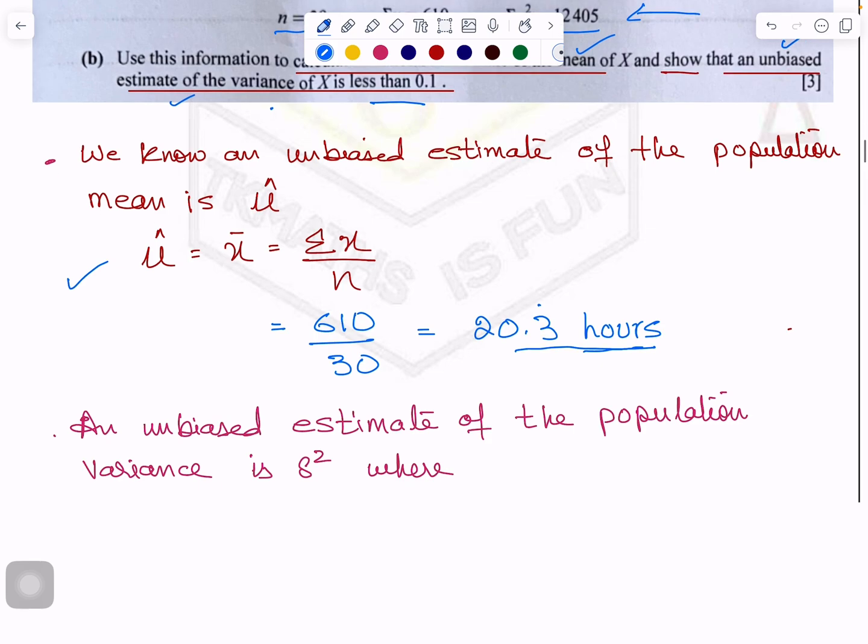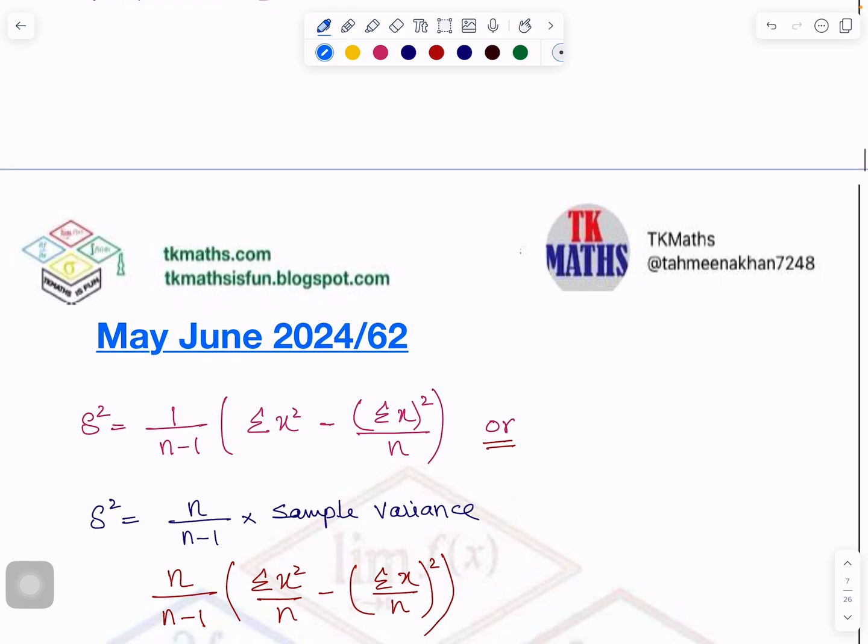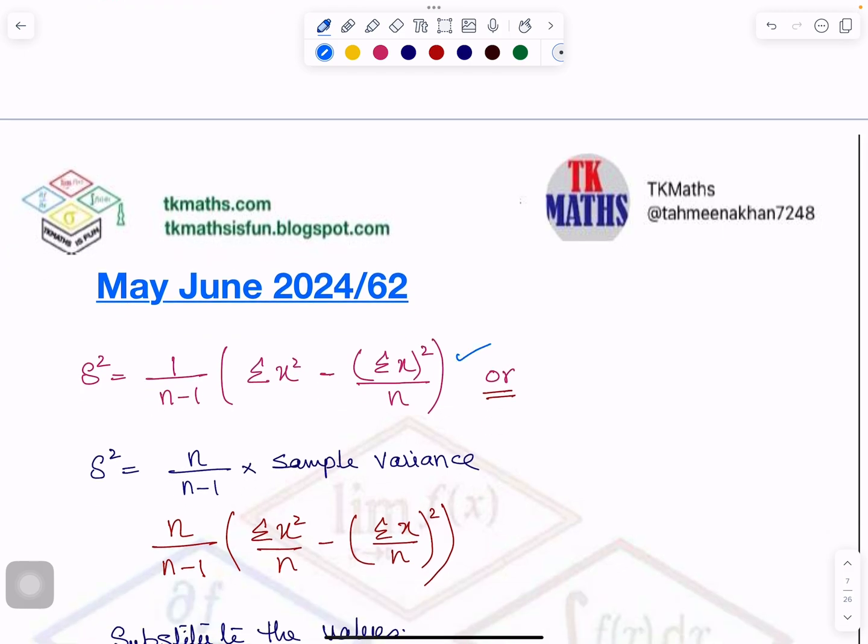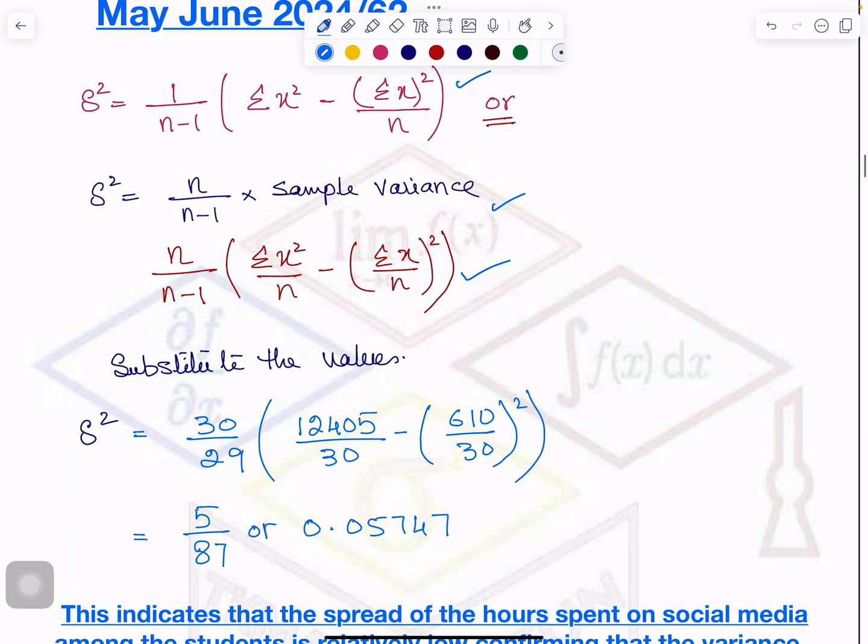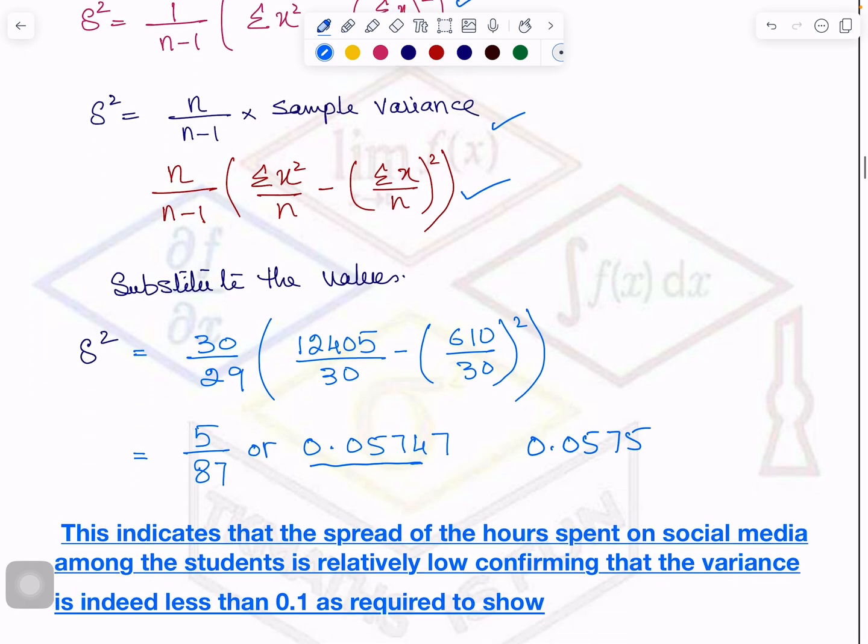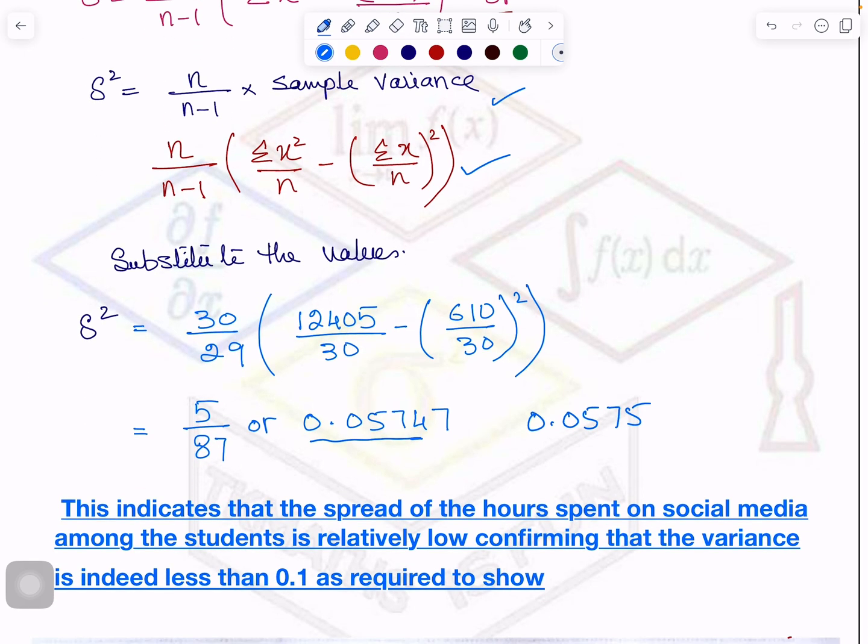Then, after that, it is an unbiased estimation of the population variance. Again, you know the formula. Either this one or this one. I like using this one, so I am using it. Your answer comes of variance is 0.05747. In three significant figures, it will be 0.0575. If you have to write answer in three significant figures, you will write it like this.